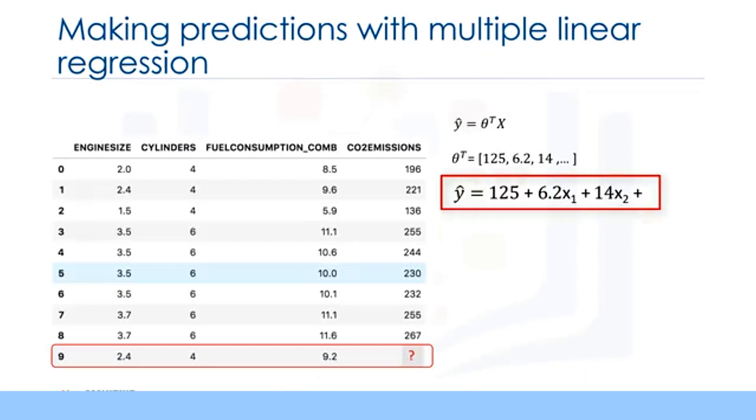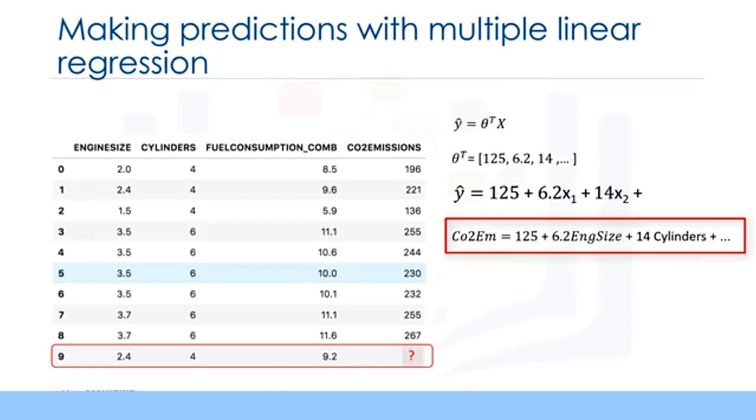Once we find the parameters, we can plug them into the equation of the linear model. For example, let's use theta 0 equals 125, theta 1 equals 6.2, theta 2 equals 14, and so on. If we map it to our dataset, we can rewrite the linear model as CO2 emissions equals 125 plus 6.2 multiplied by engine size plus 14 multiplied by cylinder and so on.